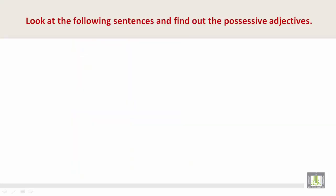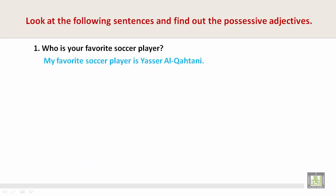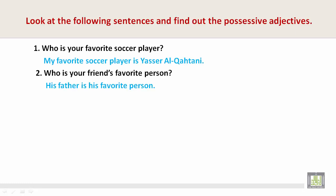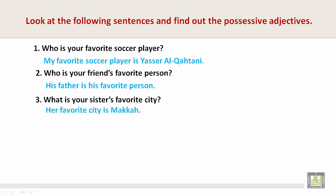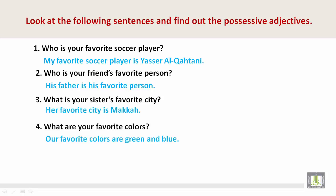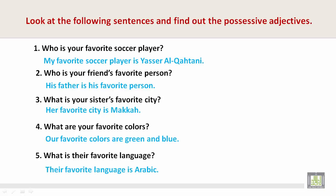Look at the following sentences and find the possessive adjectives. Who is your favorite soccer player? My favorite soccer player is Yasser Al-Qahtani. Who is your friend's favorite person? His father is his favorite person. What is your sister's favorite city? Her favorite city is Mecca. What are your favorite colors? Our favorite colors are green and blue. What is their favorite language? Their favorite language is Arabic.